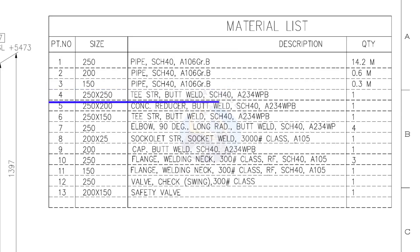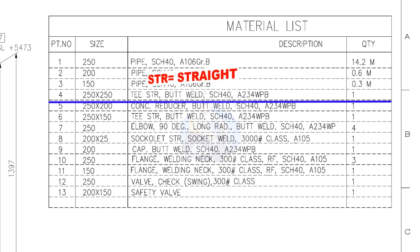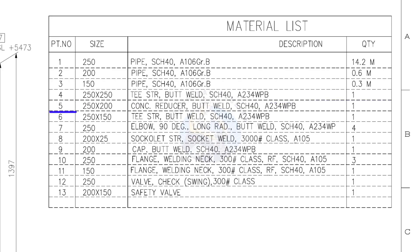Item number 4: 250 into 250 straight T, butt welded, schedule 40, quantity 1. Item number 5: 250 into 200 concentric reducer, butt welded, schedule 40, quantity 1.